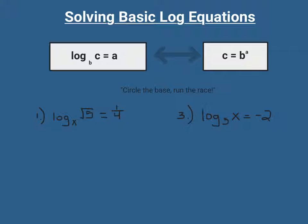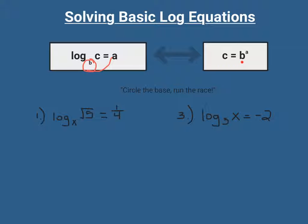In order to do that, we have this little phrase: circle the base, run the race. What that means is we take our base in the log equation, circle it, and when we say run the race, we cross the finish line — take it and move it to the other side of the equal sign. The word log drops off, and this base becomes the base on the other side of the equation. So that leaves us with c equals b to the a power. Circle the base and run the race — make it the base on the other side of the equation.